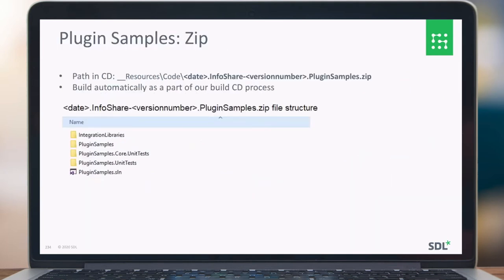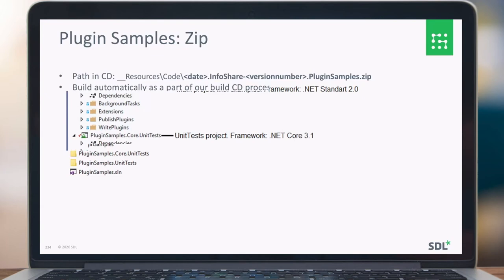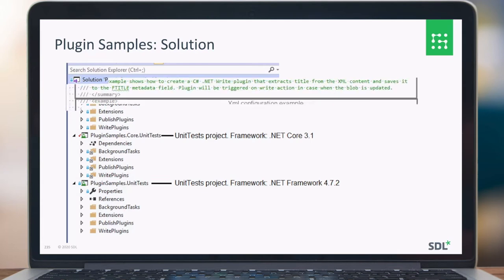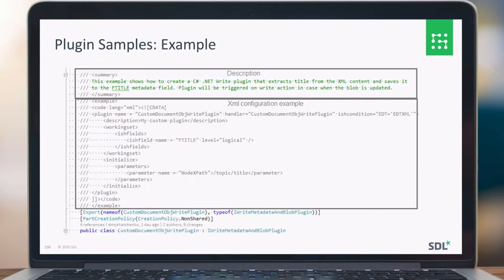To help you in the process of creating .NET Standard 2.0 plugins, or converting them, on the CD layout we put in a plugin examples zip file. If you open the zip file, you can see some examples there of how to create those plugins. If you open the solution, you can see there are some plugin examples and also some unit tests using .NET Core but also the full framework, so you can test both scenarios. Those plugins also have a little documentation on how to install and use them, which can serve as a base for configuring your own plugin.